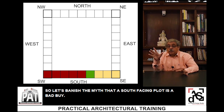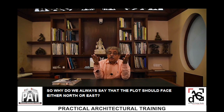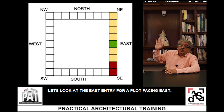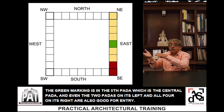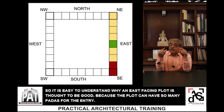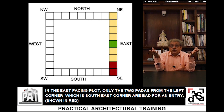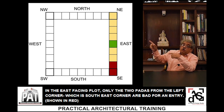Let's banish the myth that a south-facing plot is a bad buy. Now let's look at the east-facing plot. If you have an east-entry plot, the green marking is in the fifth Pada — the central Pada — and even the two Padas on its left and all four on its right are also good for entry. So it is easy to understand why an east-facing plot is thought to be good, because it can have so many Padas for entry. Only the two Padas from the south-east corner are bad.